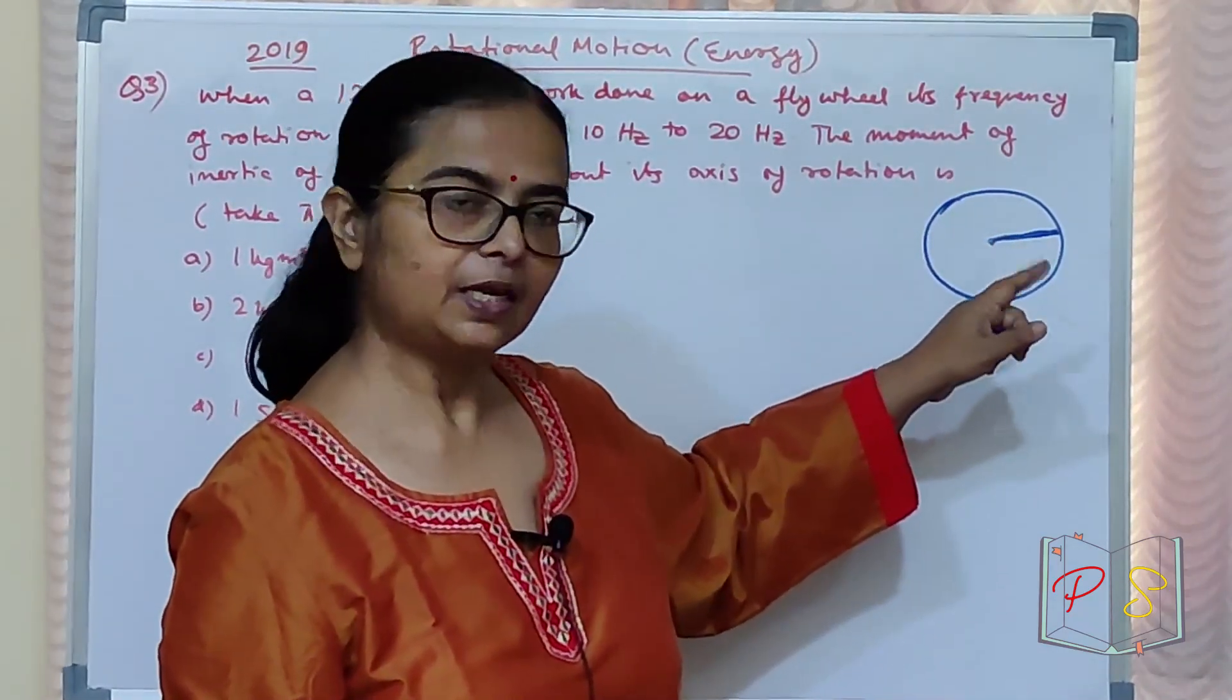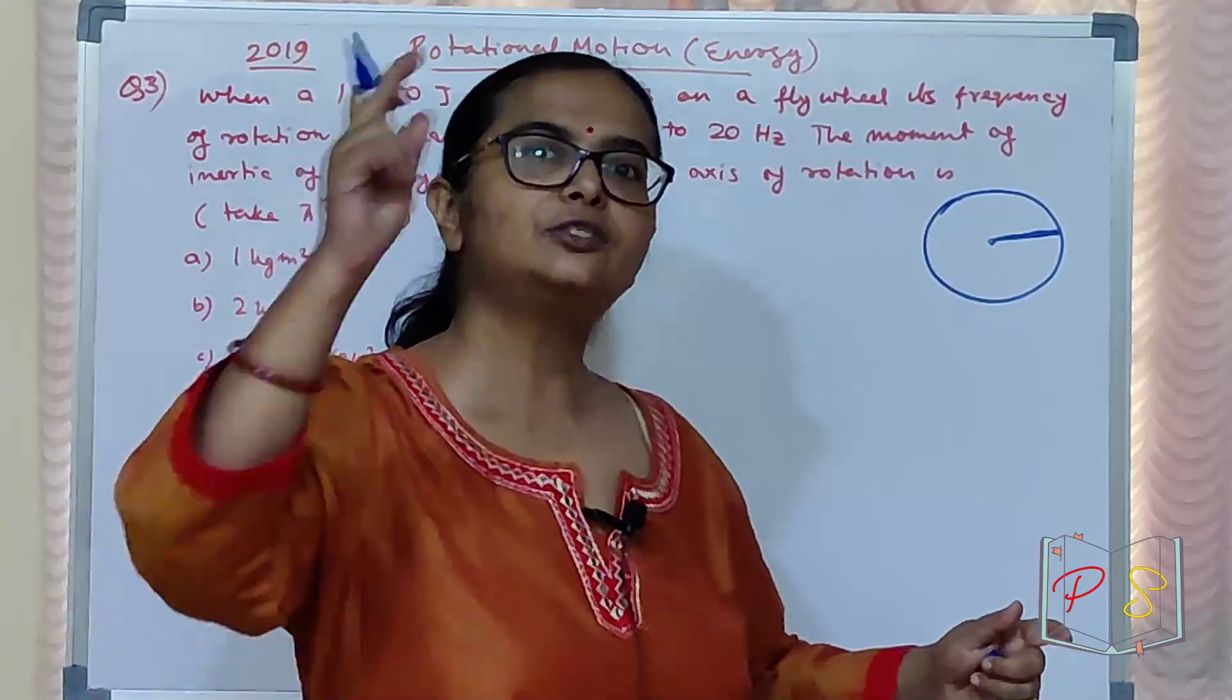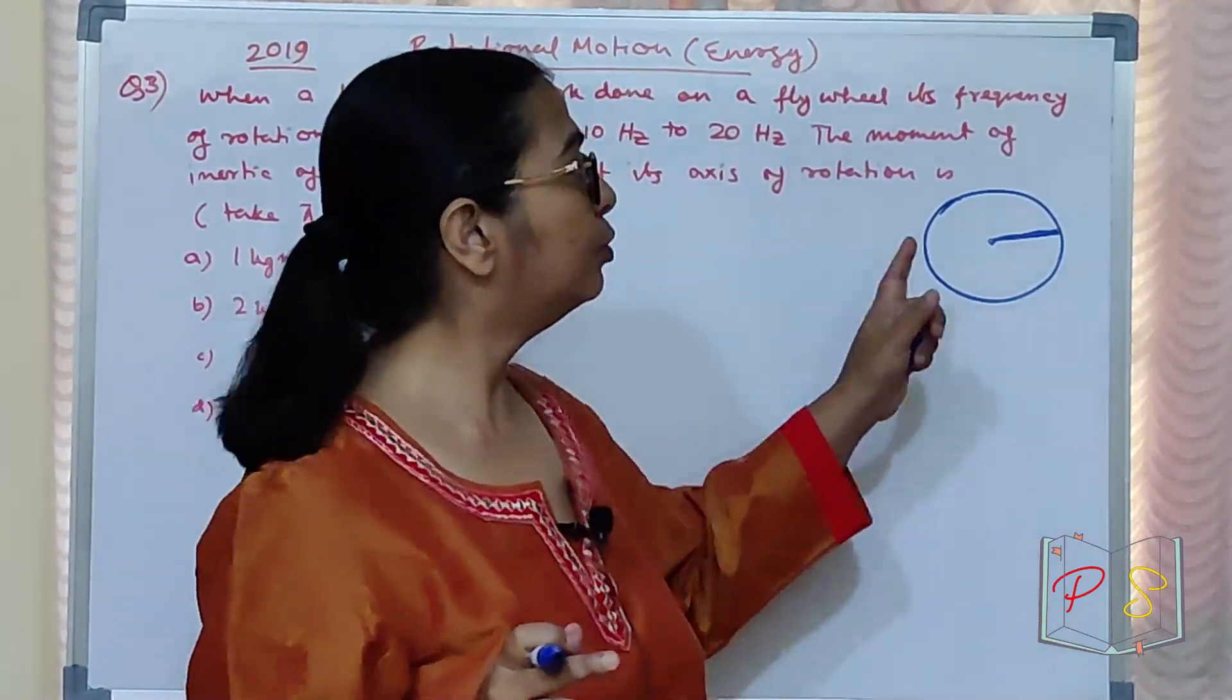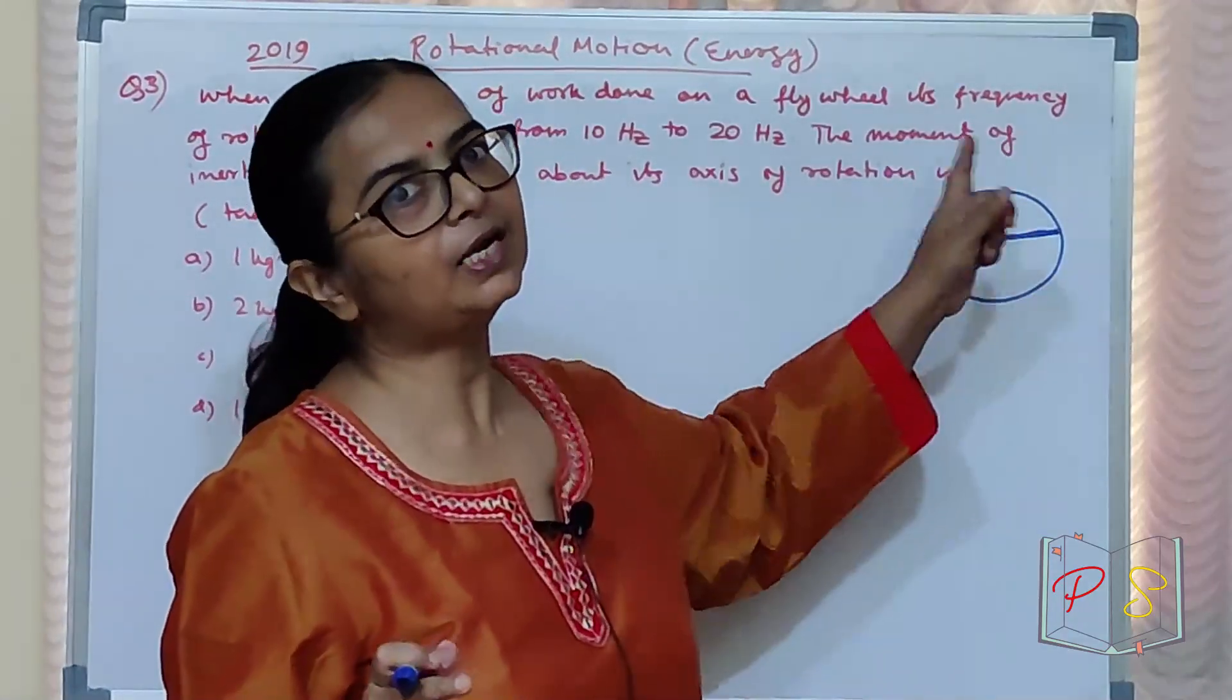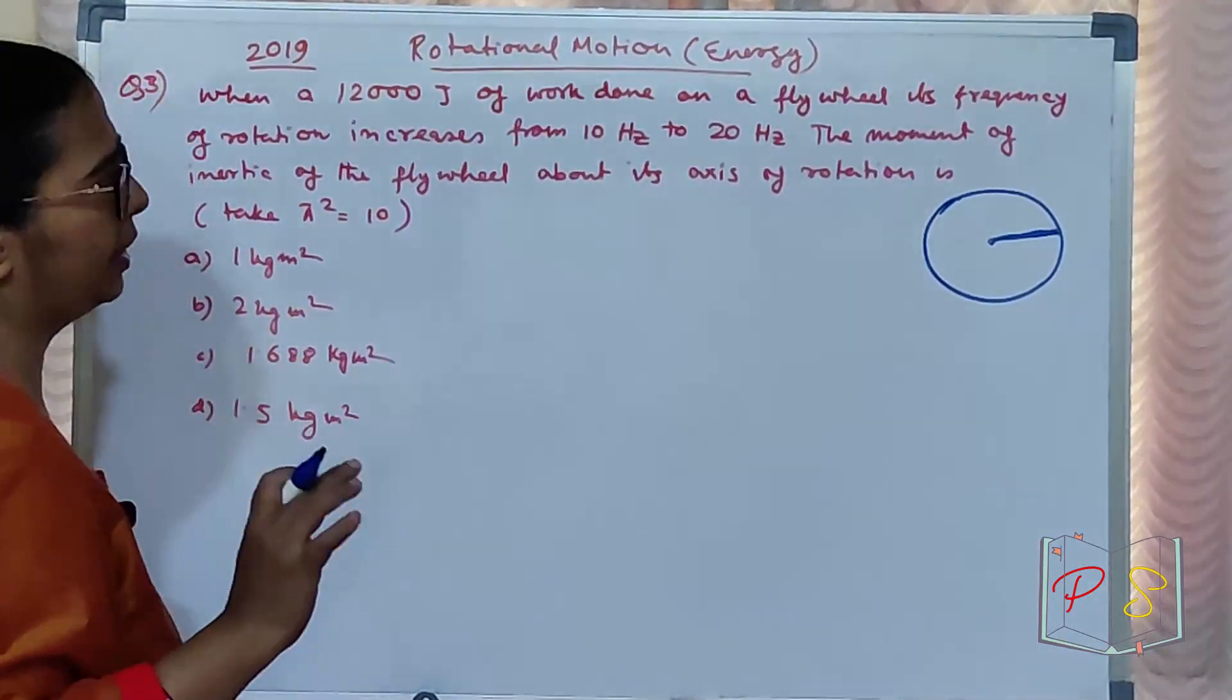Most of the mass is on the rim. Ek bar ghumate ho toh fast ghumate raita hai. Rookte nahi hai, kyunki moment of inertia iska bohut zyada hota hai. Itna hai yalo. It is a wheel.